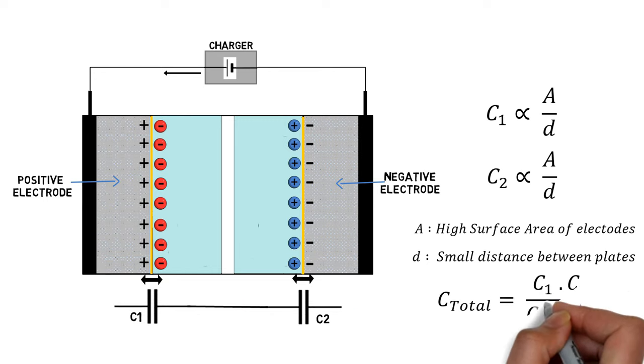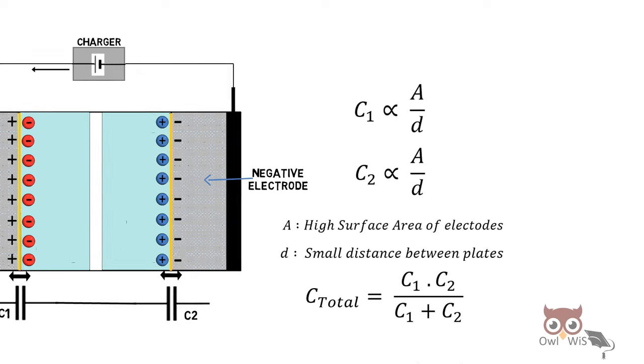The total capacitance is C1 times C2 divided by C1 plus C2, as the capacitors are connected in series.